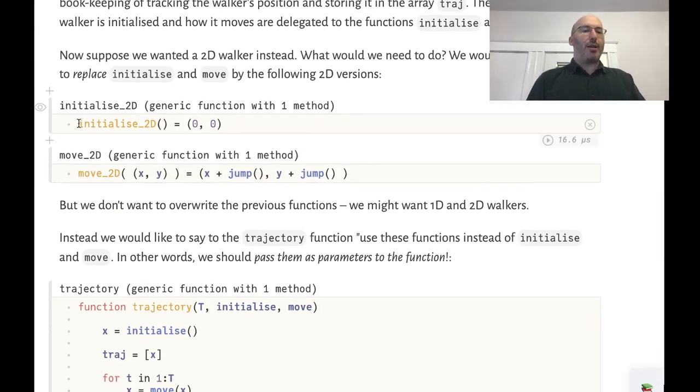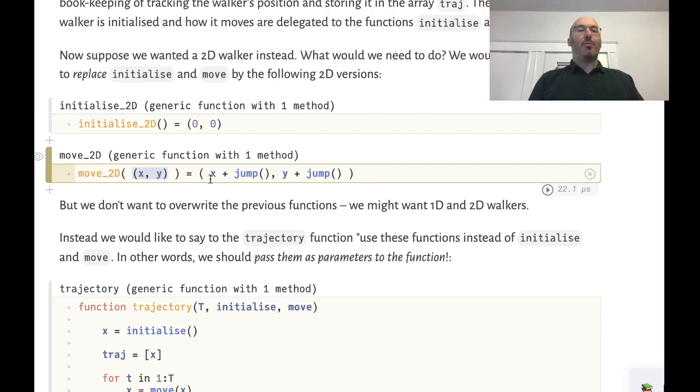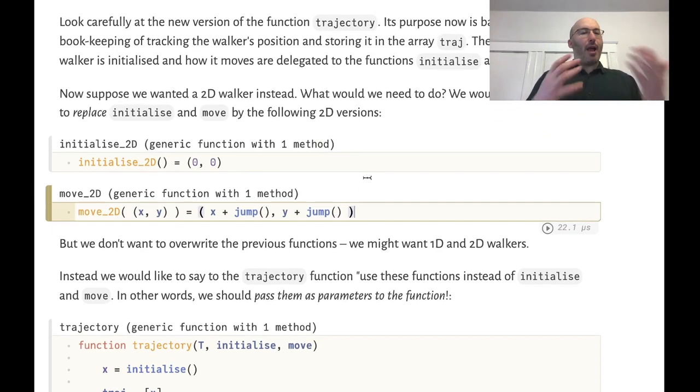So for example if we do initialize_2d and we return a tuple of two positions x and y coordinates, and move_2d takes in a tuple and returns a new tuple after both x and y have jumped. Then if we can tell trajectory to use these functions instead of the initialize and move functions that were already defined we will actually have a two-dimensional walker. So how could we do that?